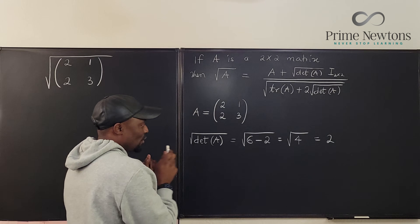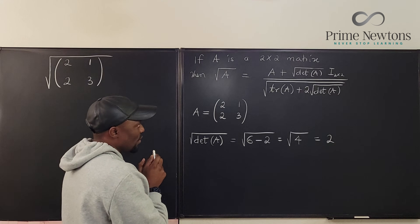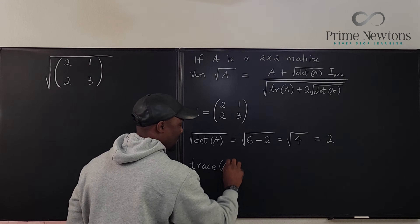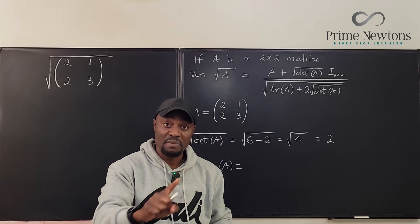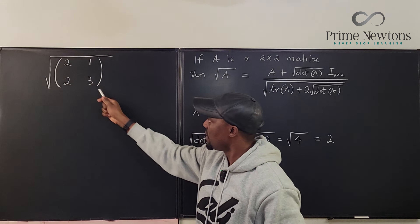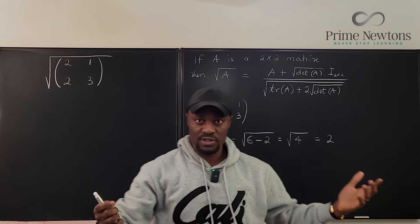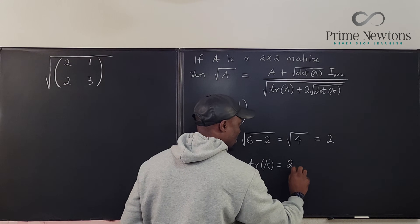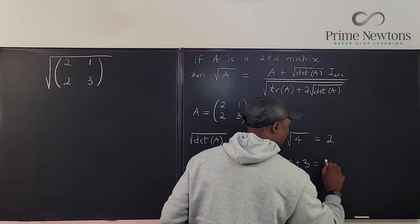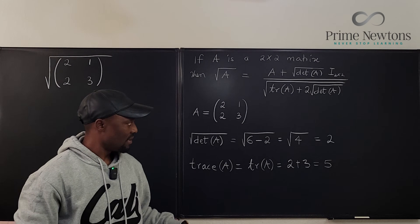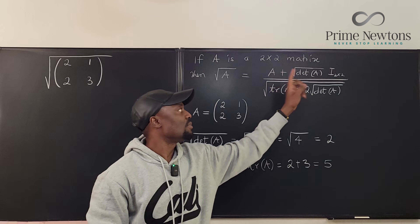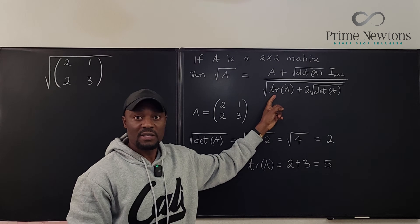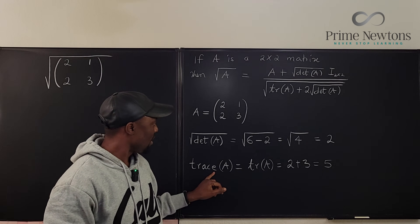Now let's find the trace of A. The trace is the sum of all entries on the main diagonal. Looking at the main diagonal, it's just 2 plus 3, which equals 5. So the trace of A equals 5. Those are the only three ingredients we need: the matrix itself, the determinant and its square root, and the trace.